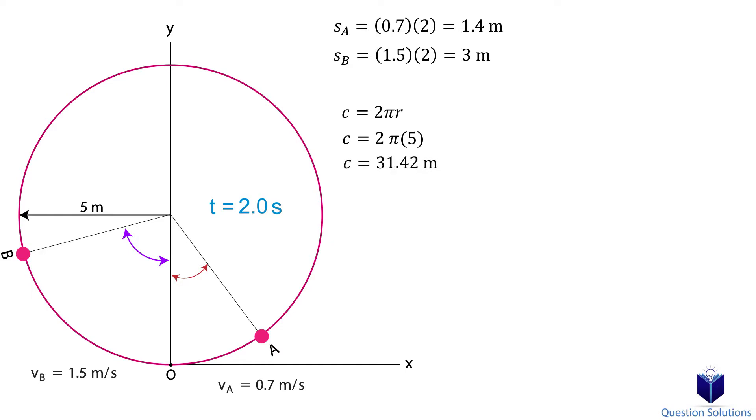We know particle A moved 1.4 meters. We also know that a circle is 360 degrees. So if we take a ratio, we can write it using degrees. In other words, we can divide 1.4 by 31.42 meters, and then multiply it by 360 degrees. That gives us 16.04 degrees for the first particle.